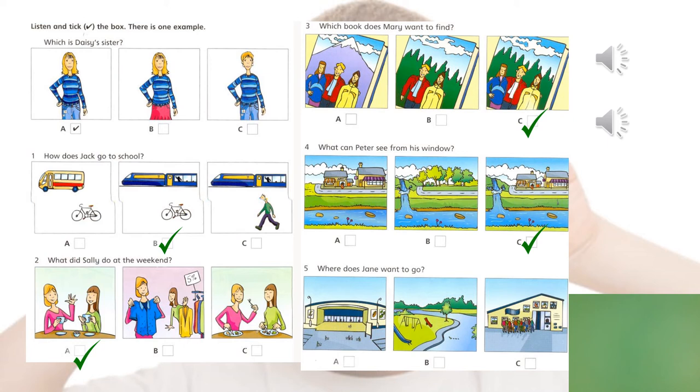And this one is a little bit tricky. Where does Jane want to go? She didn't want to go to the park, but she didn't want to go shopping either. She wanted to go to the cinema.